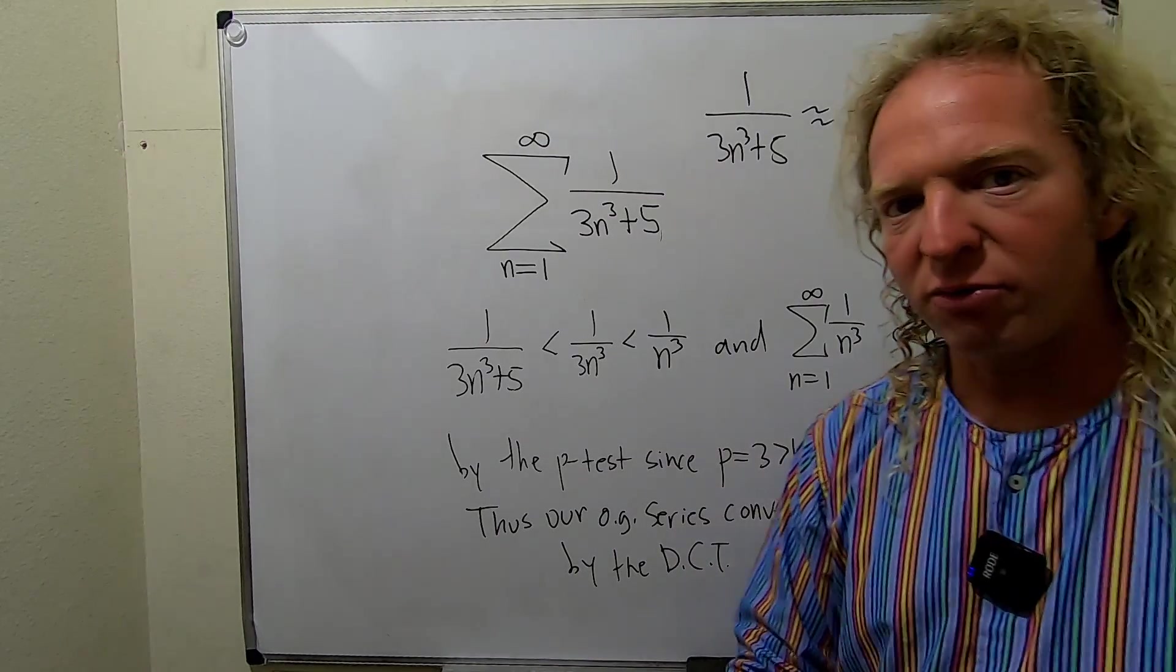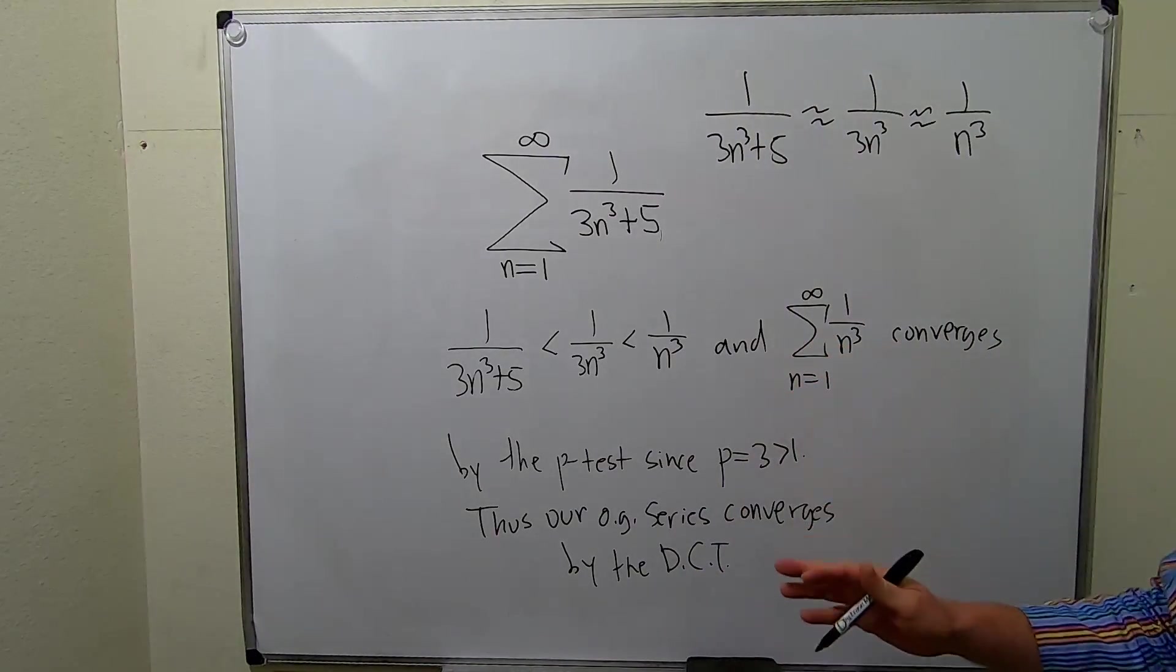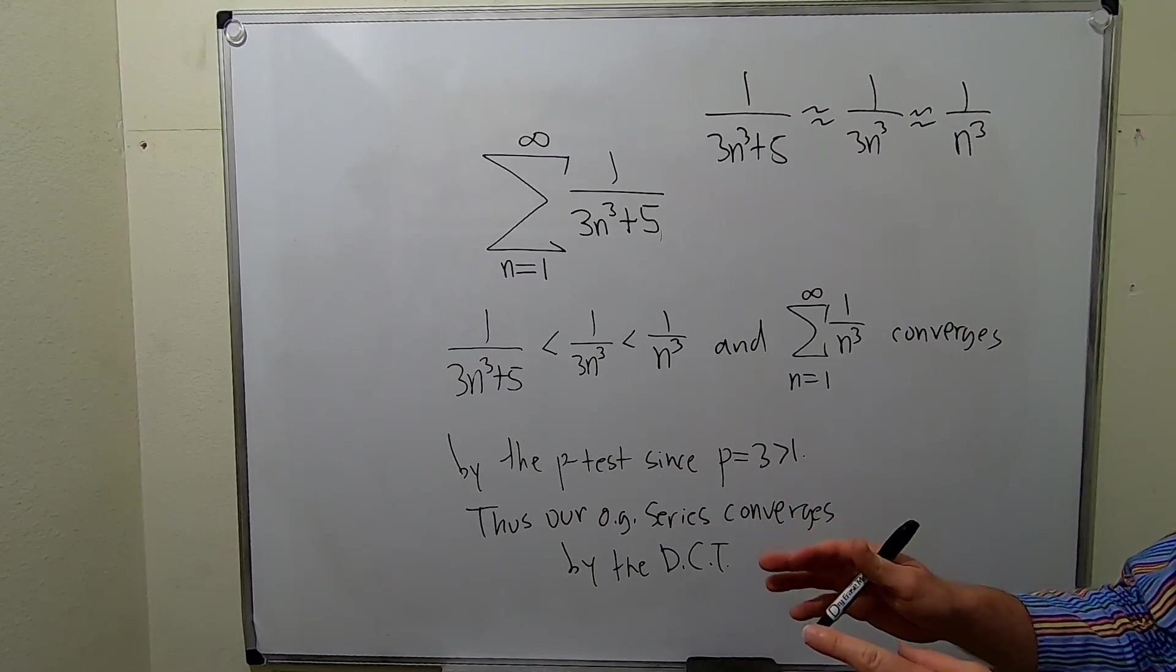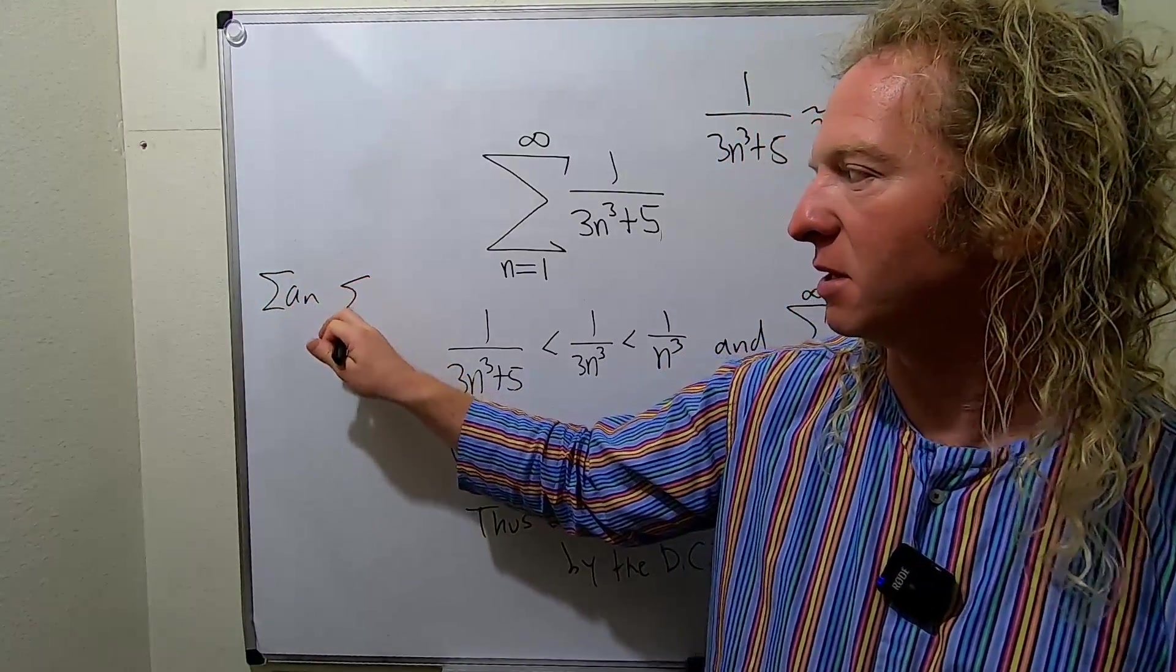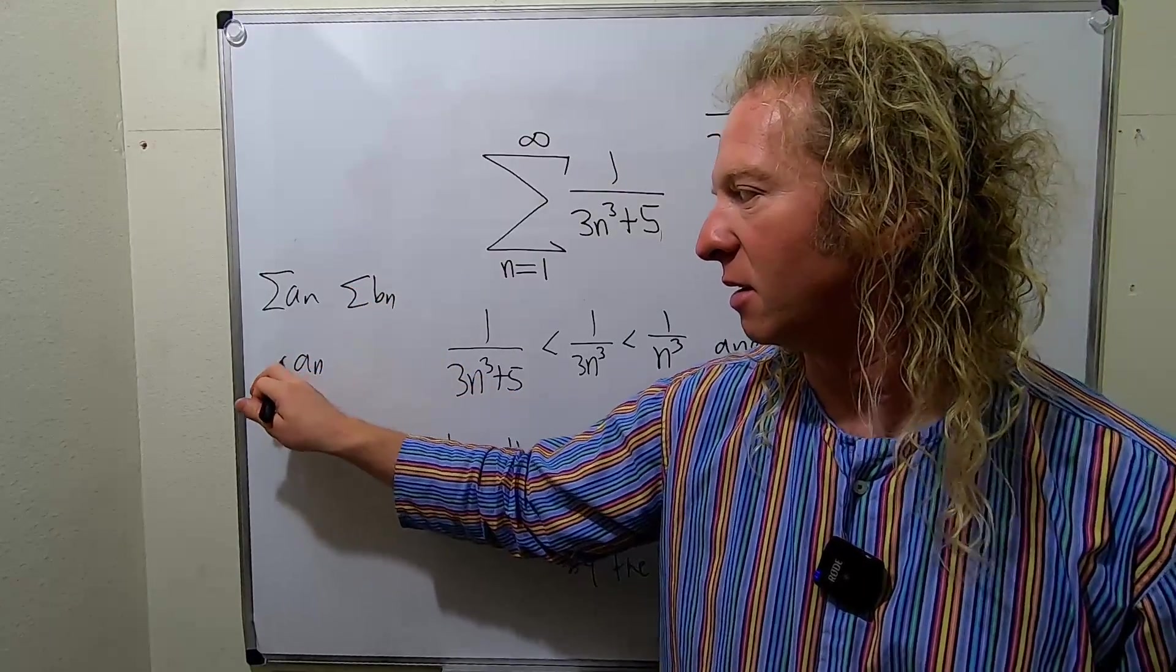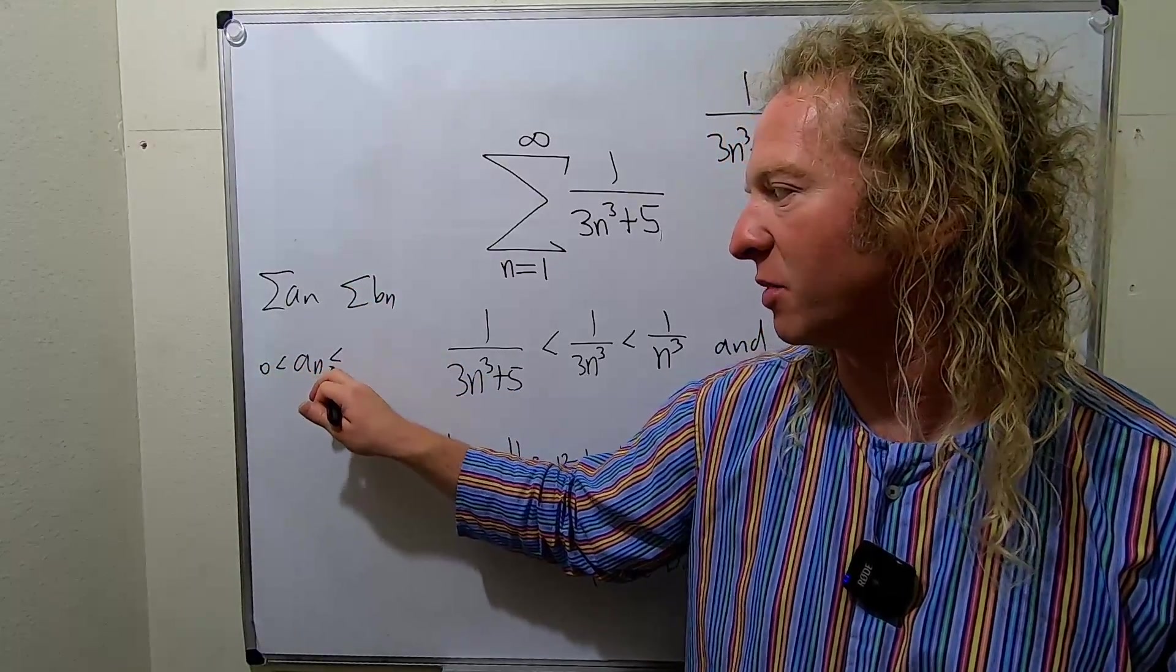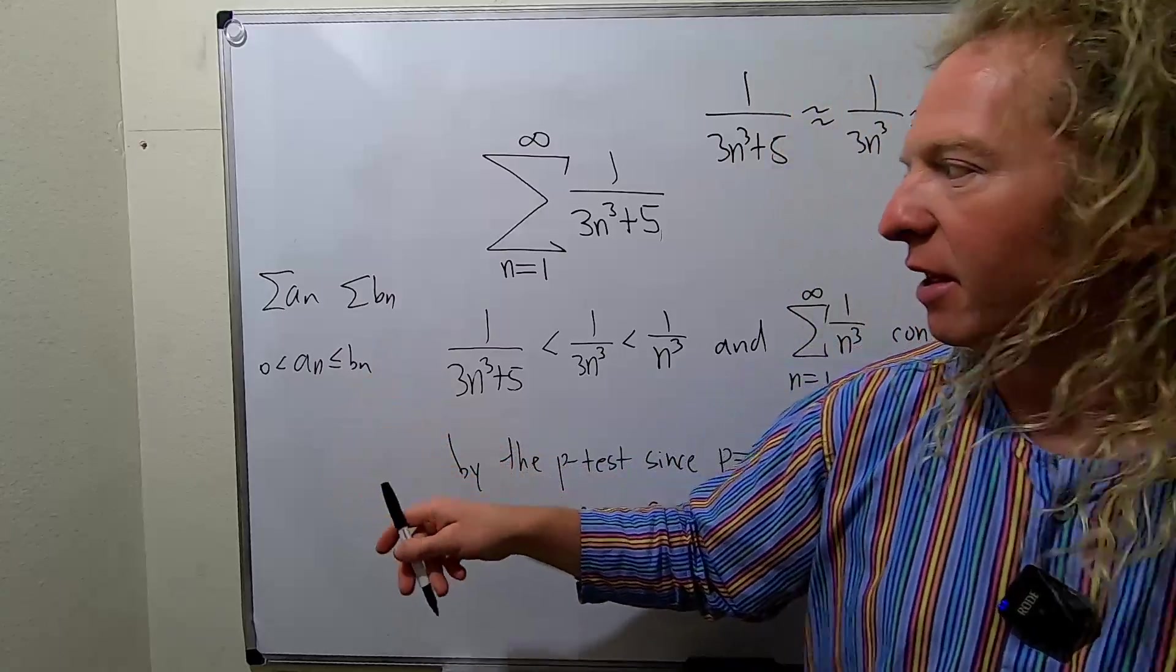It's really important when working through these problems to carefully justify the conditions. Remember, the direct comparison test says if you have two series, a sub n and b sub n, and if a sub n is positive and less than or equal to b sub n for all n, then if the b's converge, the a's converge.